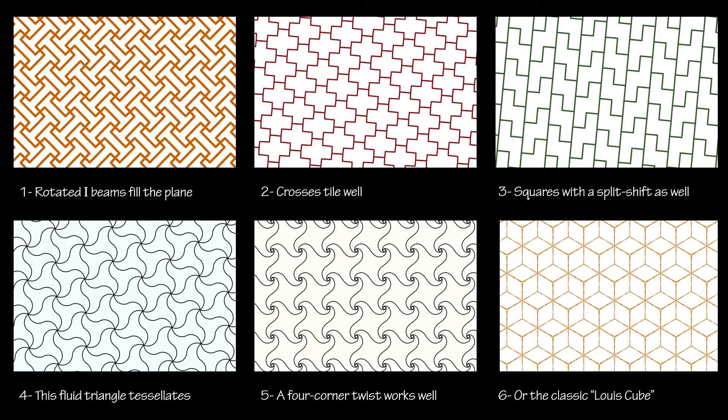Then we can get into slightly more complex shapes, some found in Islamic geometric designs. Simple tessellations with not too many lines: rotated I-beams fill the plane, crosses tile well, squares with a split shift as well. This fluid triangle tessellates — it is found in the Alhambra, a palace in Spain. A four-corner twist works well. This one is common in Zentangle patterns, or the classic Louis cube from rotated lozenges. These geometric tiles have no recognizable human or animal shapes, and that is the difference between tile patterns and tessellations.